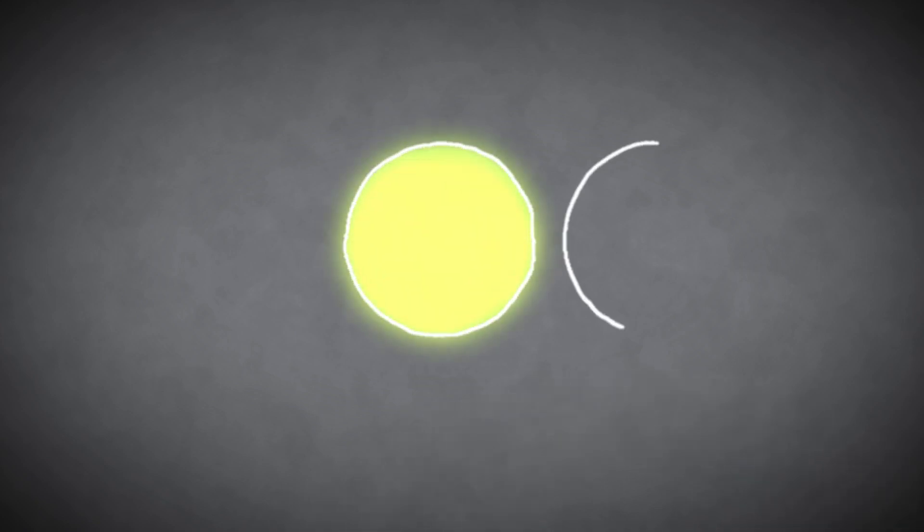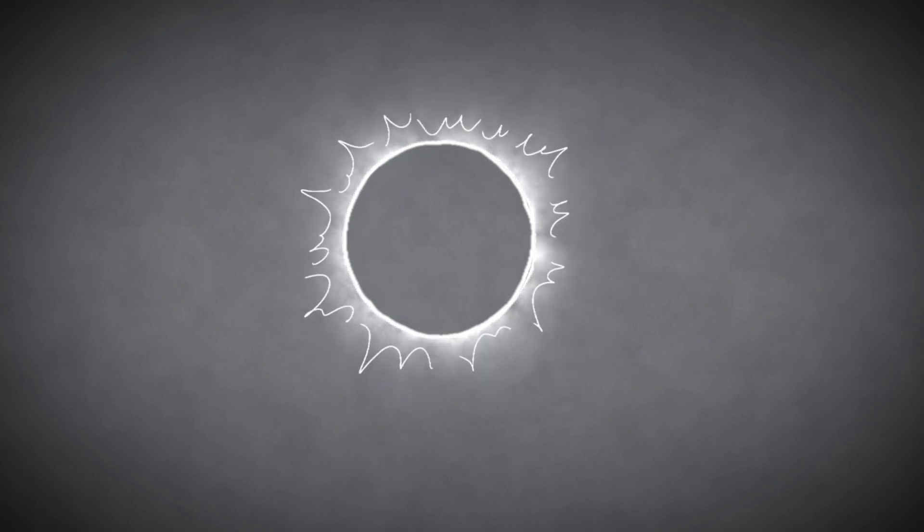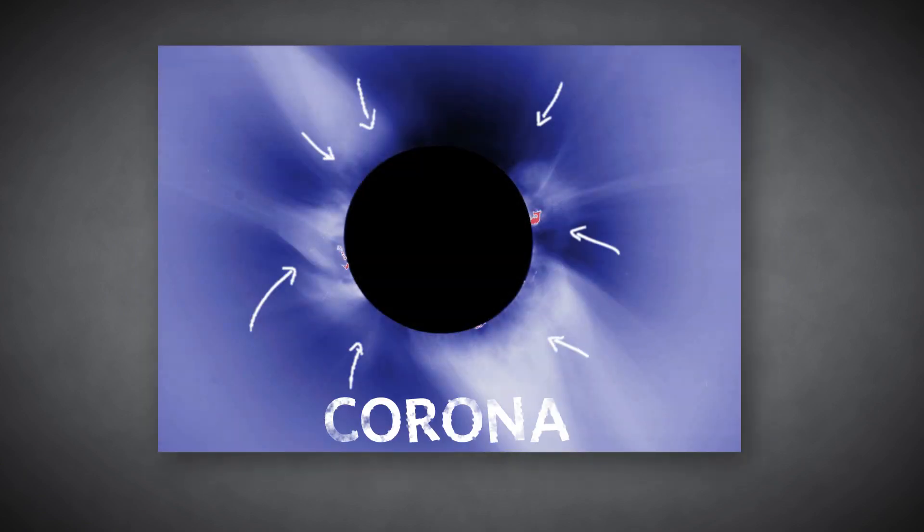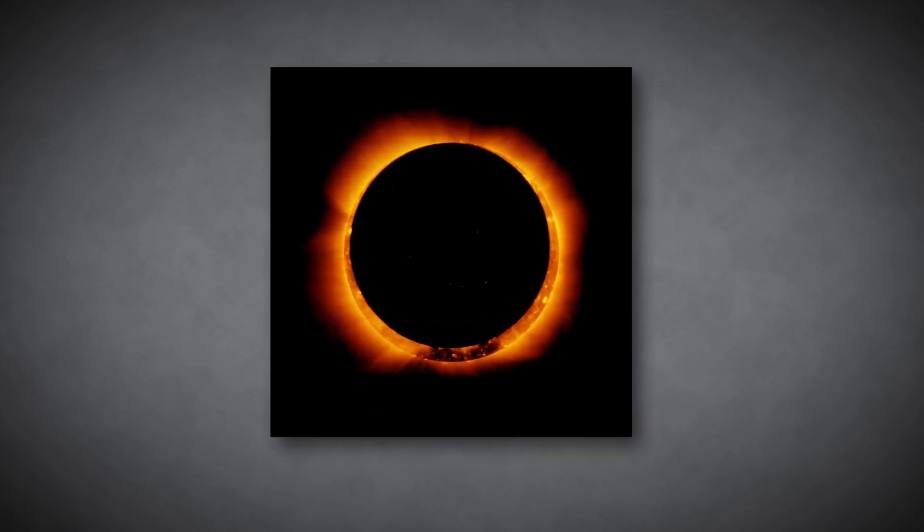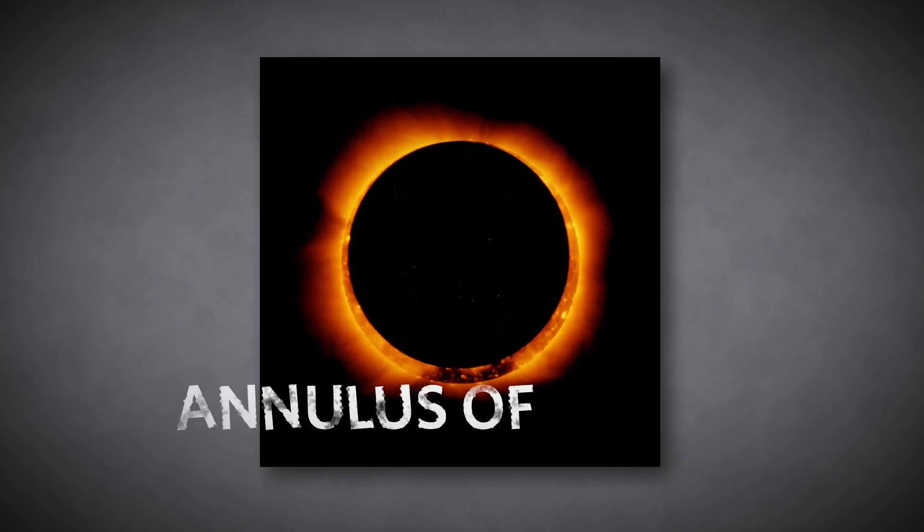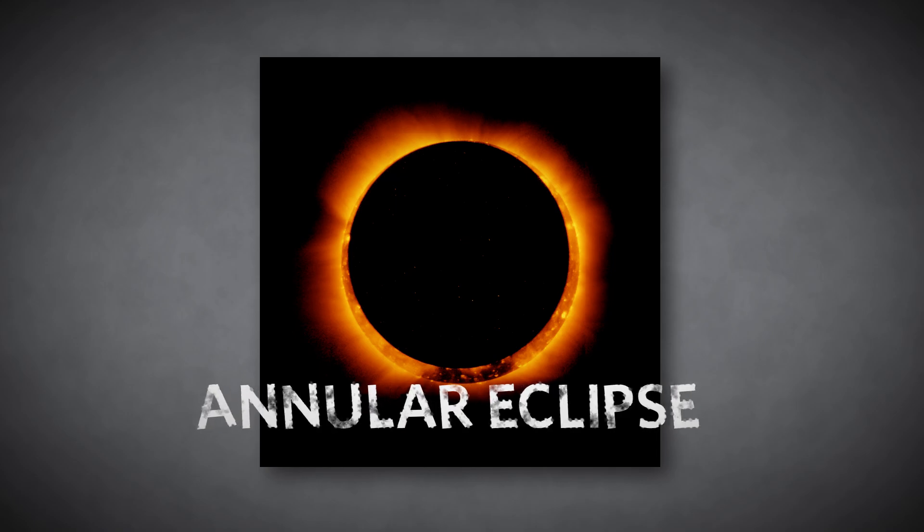During a total solar eclipse, the entire sun is obscured, allowing its pale outer atmosphere, or corona, to be seen. When the moon is a little farther away, appearing slightly smaller, it might not completely block the sun's disk, leaving a thin ring of light visible around the moon's silhouette. This bright annulus of light washes the sun's corona from view.